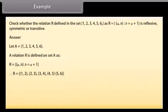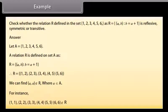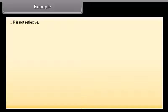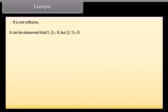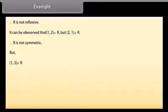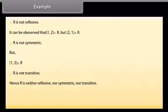We can find that (a, a) does not belong to R for any a belonging to A. For instance, (1,1), (2,2), (3,3), (4,4), (5,5), (6,6) do not belong to R. Therefore, R is not reflexive. Hence, R is neither reflexive nor symmetric nor transitive.